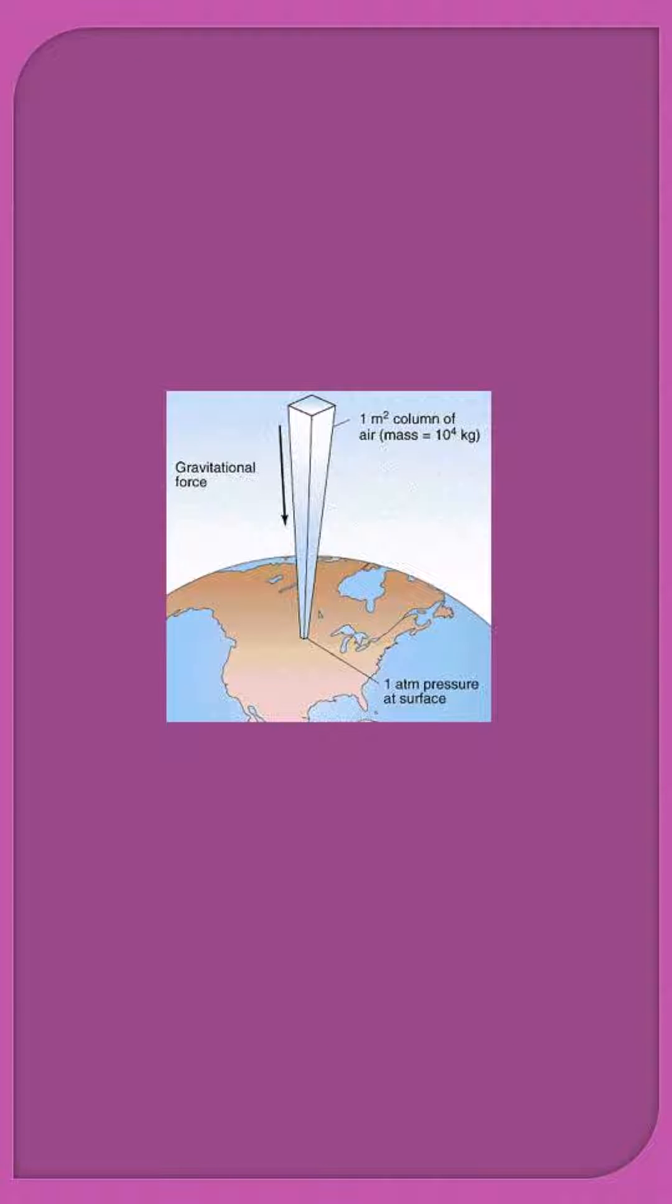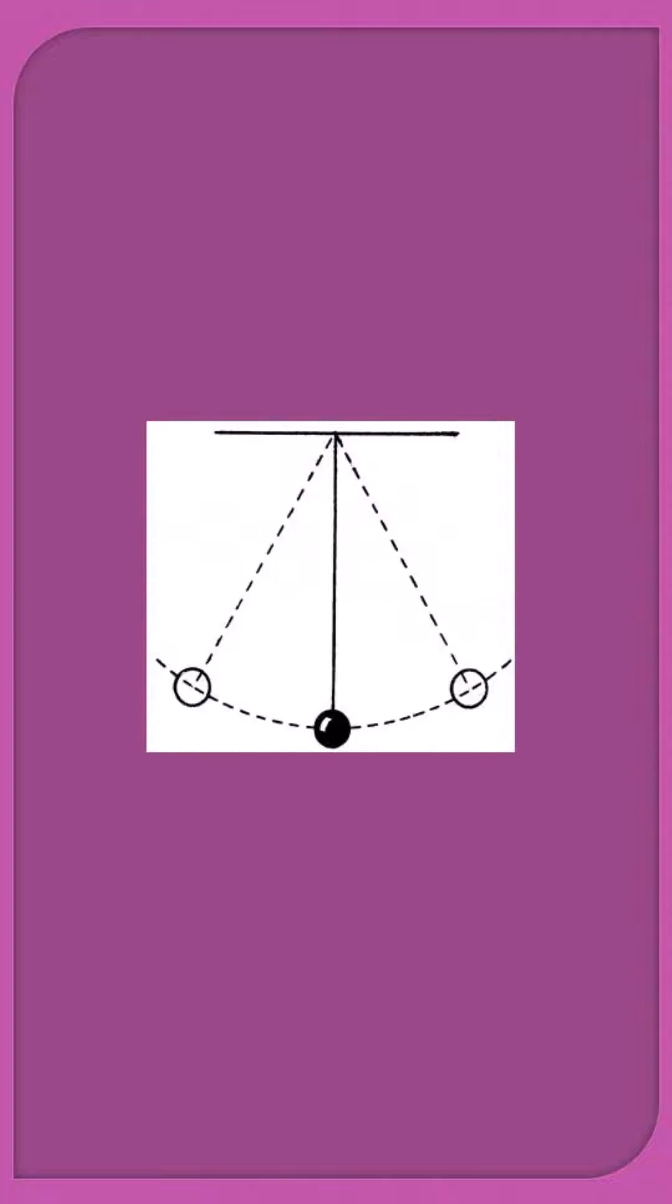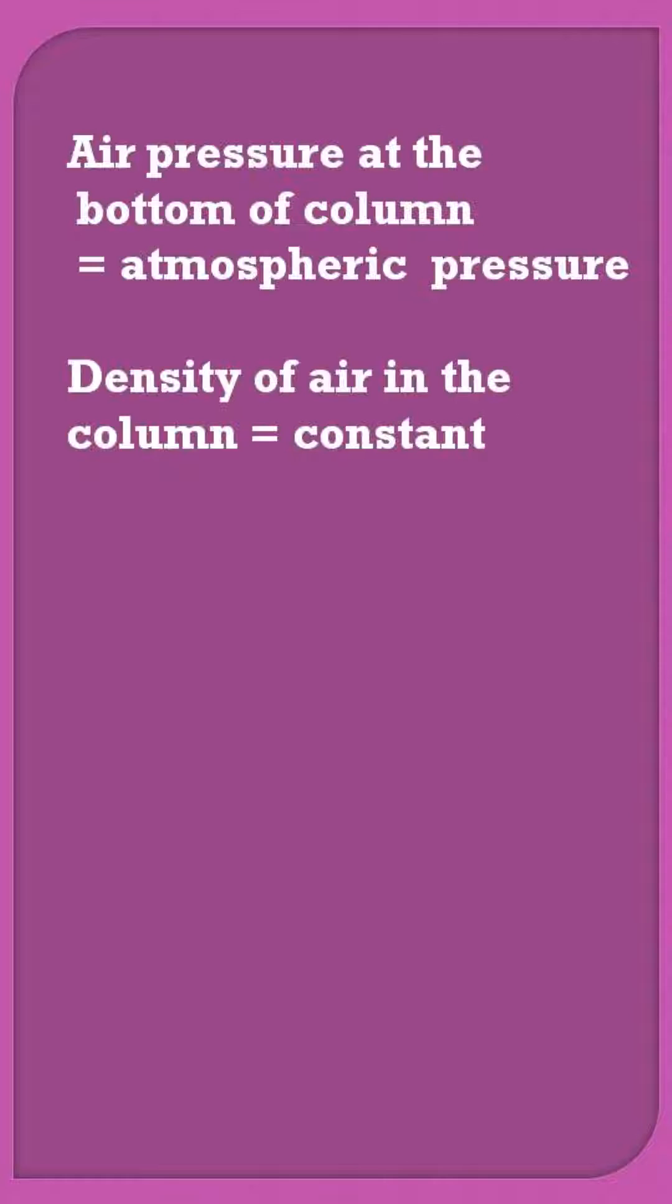Newton took the analogy of a very long air column and a simple pendulum. Newton took the height of this air column such that the air pressure at the bottom of the column remains atmospheric pressure.